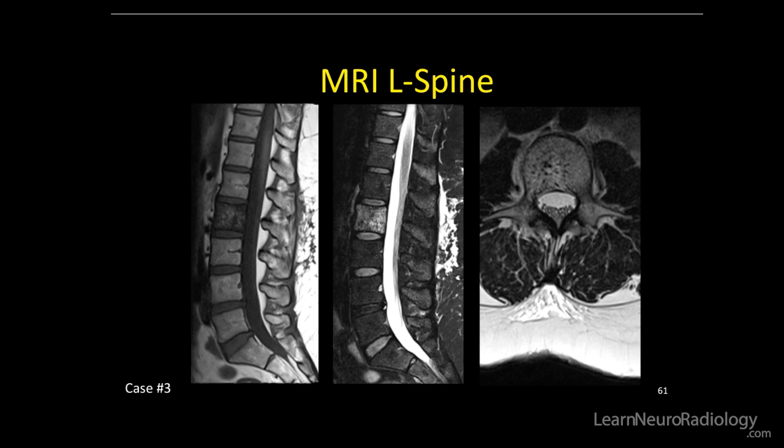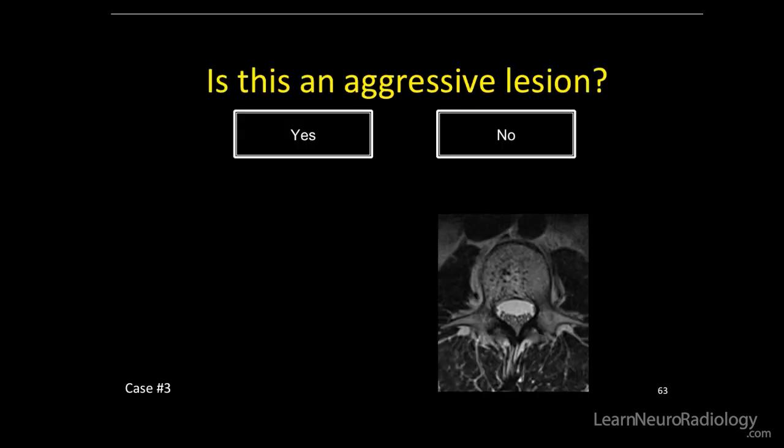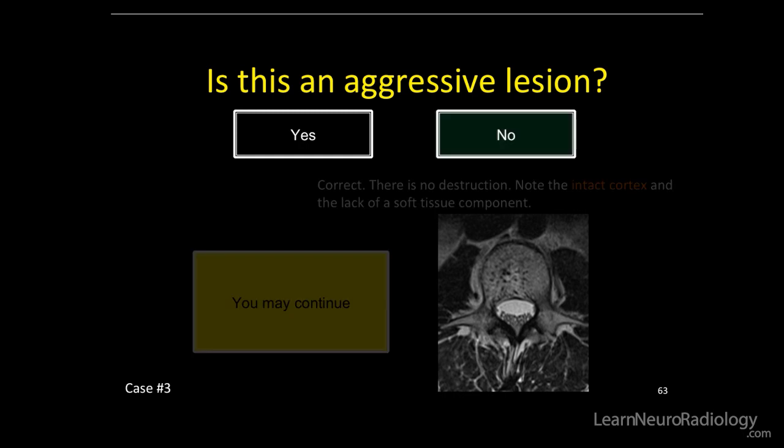No cortical destruction or soft tissue component so far. Here's the corresponding CT. The lesion is somewhat more sclerotic than the rest, but it has a pretty characteristic trabecular pattern. So is this an aggressive lesion? I don't see any of those aggressive features, so we'll go with no.